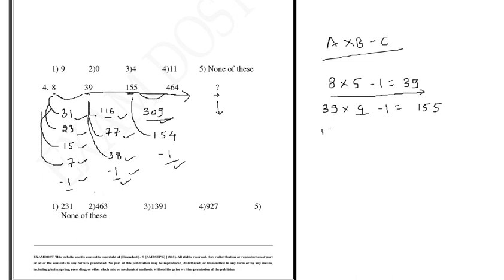So, 155 times the next series. Let us count the number of steps: 1, 2 and 3 steps only. So, 155 times 3 minus 1 is 464.